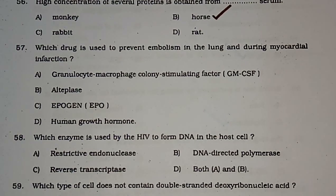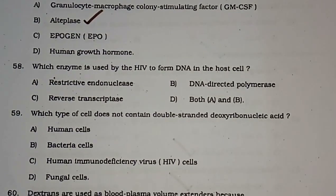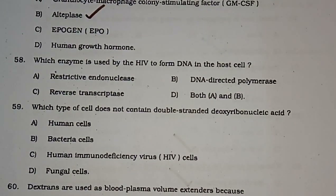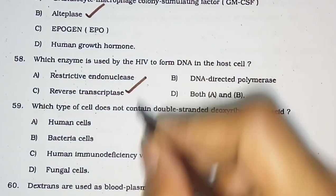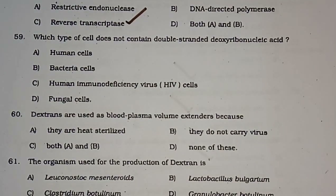Question number 57: Which drug is used to prevent embolism in the lung and during myocardial infarction? Options are granulocyte macrophage colony stimulating factor, alteplase, hipogen, human growth hormone. The correct answer is alteplase. Question number 58: Which enzyme is used by HIV to form DNA in the host cell? Options include reverse transcriptase. The correct answer is option C — reverse transcriptase.